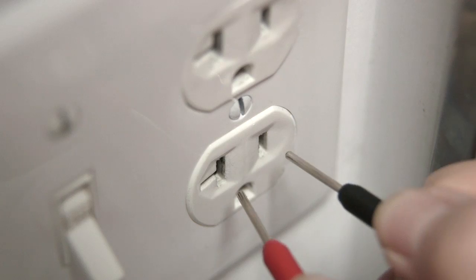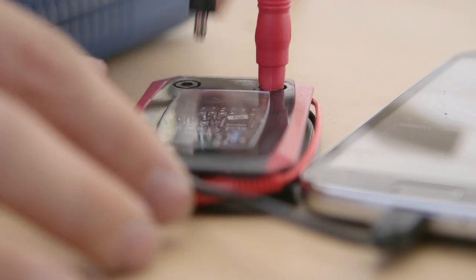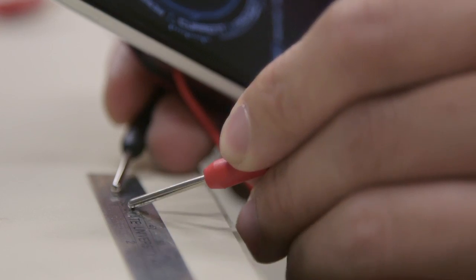Or, if you measure a wall socket, it shows you a diagram of the wire configuration. Instead of just a reading, Volset senses what you're doing and helps you to master your task.